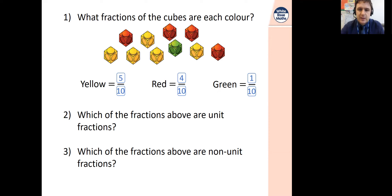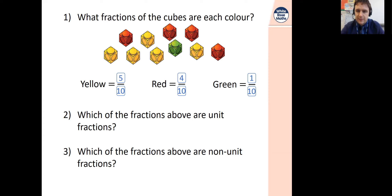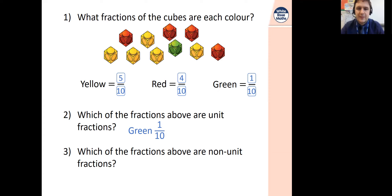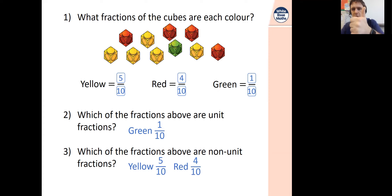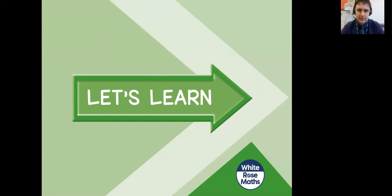Which of the fractions above are unit fractions? We know from earlier in the week that a unit fraction has a numerator of 1. So the fraction that is a unit fraction on there is the green one, 1 tenth. Which means that the fractions that are non-unit fractions, where the numerator is greater than 1, are the other two that are left: 5 tenths and 4 tenths. Super duper! Should we get on with some new learning? Let's learn.